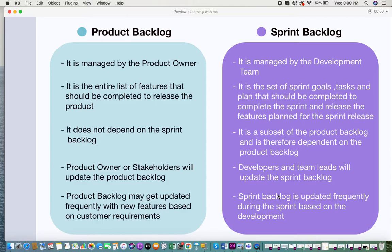The product backlog may get updated frequently with new features based on customer requirements. In the agile life cycle, you would find yourself gathering requirements after every release, after every meeting with your client, and after every retrospective meeting. You might find yourself gathering requirements even during the middle of product development. So as you keep getting requirements, you keep updating them in your product backlog.